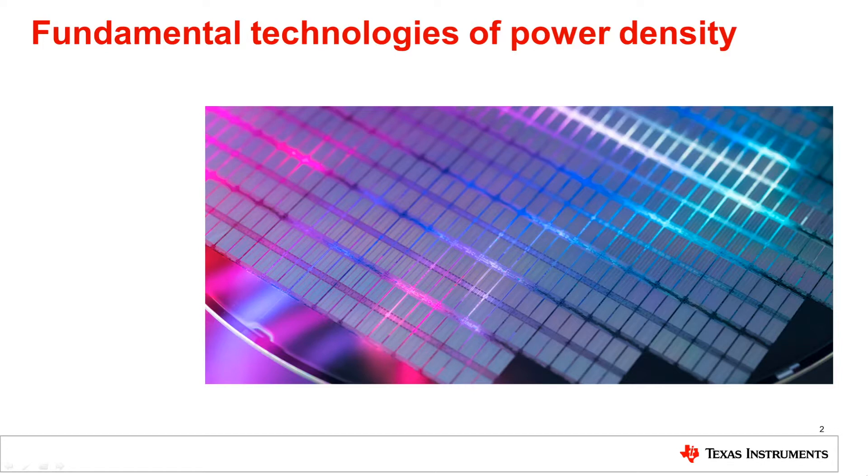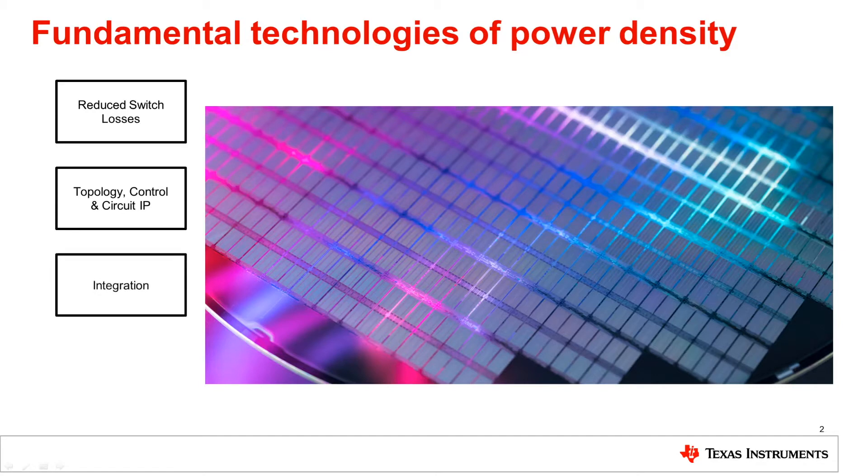We'll examine the four most important aspects of high power density solutions, as well as our relevant technologies and products supporting these specific requirements. These four areas are reduced loss generation, optimal topology and control selection, reducing system volume by mechanical and electrical integration of the components, and effective heat removal. Each of these areas will be addressed separately in the following chapters of this video series.